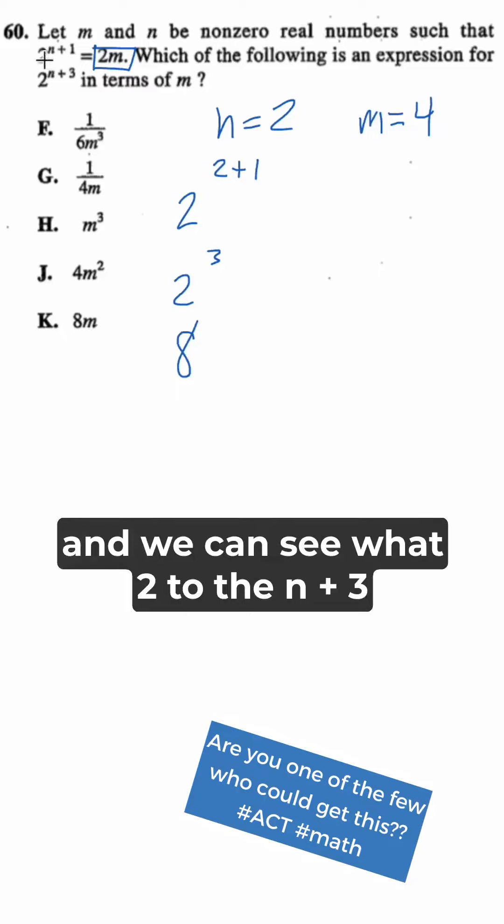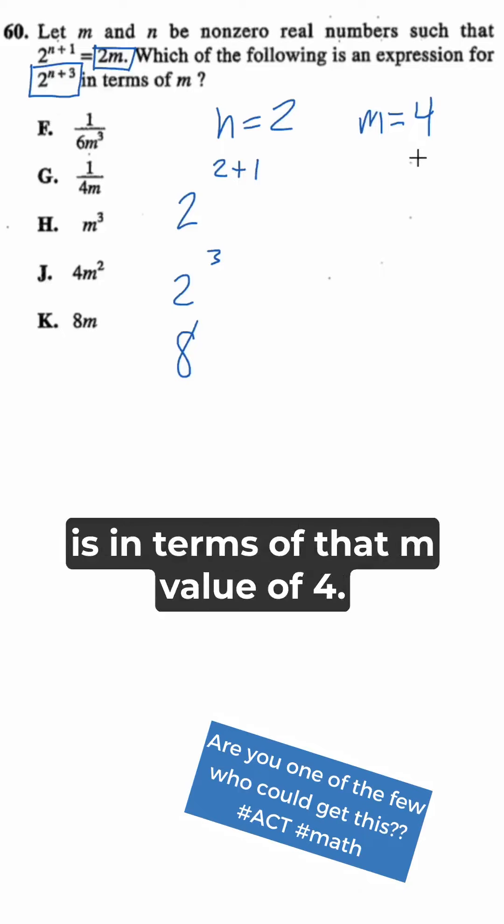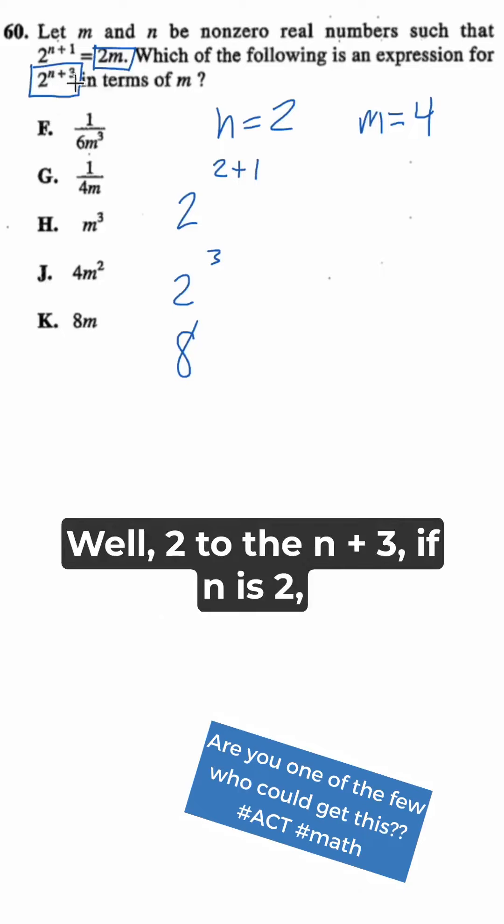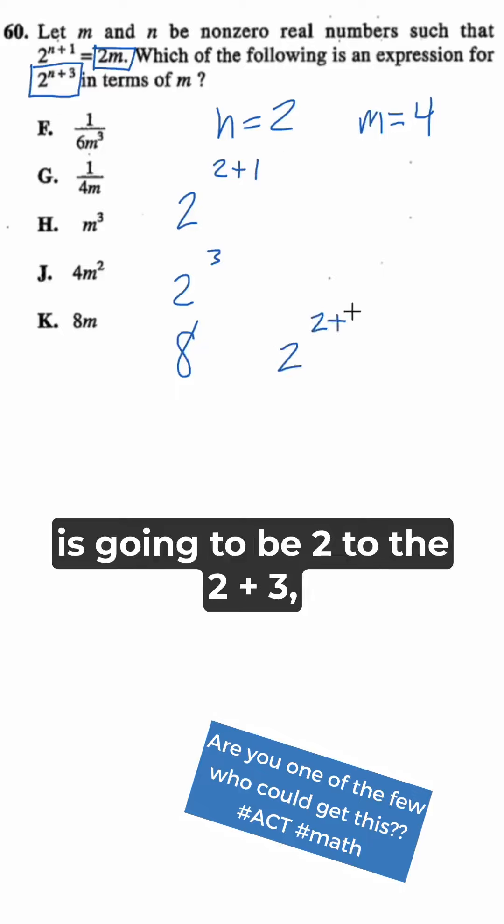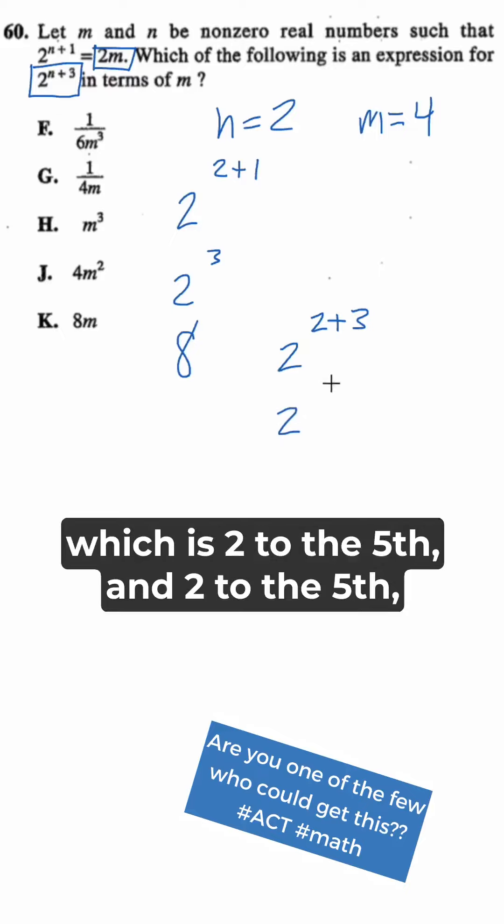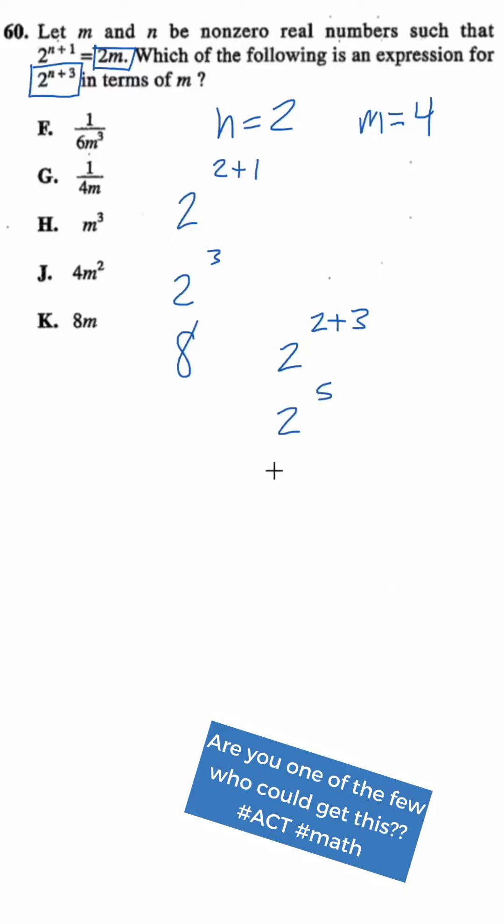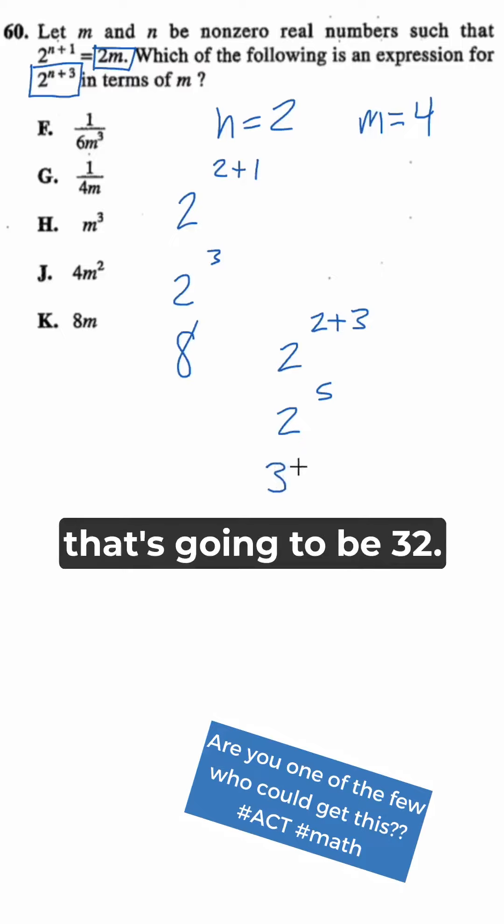And we can see what 2 to the n plus 3 is in terms of that m value of 4. Well, 2 to the n plus 3, if n is 2, is going to be 2 to the 2 plus 3, which is 2 to the 5th. And 2 to the 5th, if you don't know it, you can use your calculator, that's going to be 32.